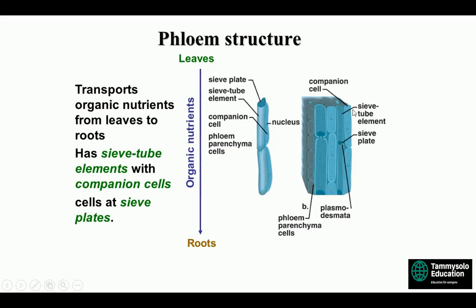In the phloem diagram we have the companion cell, the plasma membrane, sieve plates, points of attachment, and phloem parenchyma binding them together.